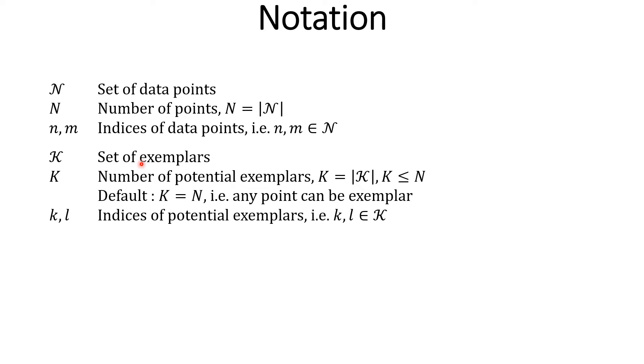Script K is the set of all exemplars. K is the number of potential exemplars from amongst the N data points. But we shall assume that K equals N.